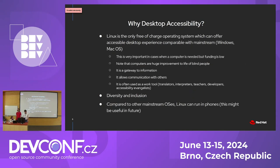Why would we care about accessibility on the Linux desktop? Currently most blind people use Windows or Mac OS on their desktops, and I don't see a reason why they shouldn't be able to use Linux, because sighted people can normally do that, and I don't see a reason why we should limit what Linux has to offer to these people.